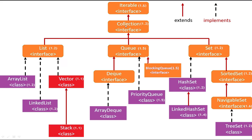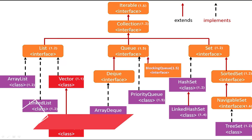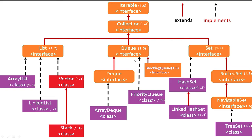Why this Collection interface? In the Collection interface, Java defines all common methods — whatever common methods we use throughout the collection classes and interfaces, all those common methods are defined in the Collection interface. After this Collection interface, they defined one more interface: Iterable. This Iterable is used for iteration. Then inside Collection, we have three child interfaces: List, Queue, and Set.